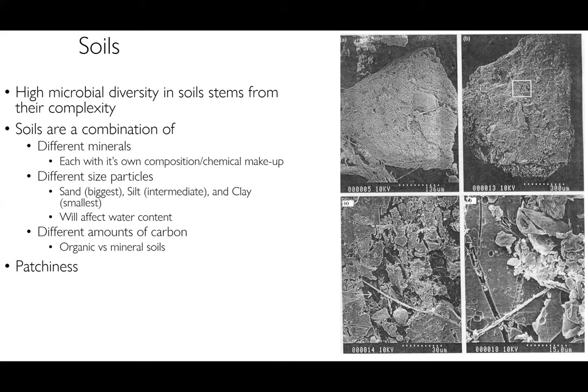The more heterogeneous the soil is, the more surface space it provides, and the more surface space you have, the more what we call niche spaces — simply different environmental conditions that microbes can survive in. All this patchiness, heterogeneity, available niche spaces, holes, and pores contribute to very high abundances and diversities of microbes. Even within a single soil particle, there could potentially be hundreds or thousands of different habitats, each harboring different microbes.